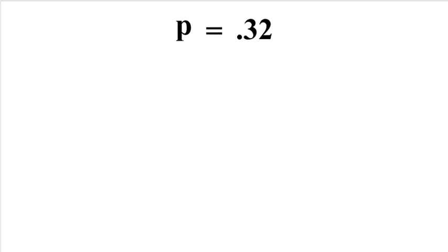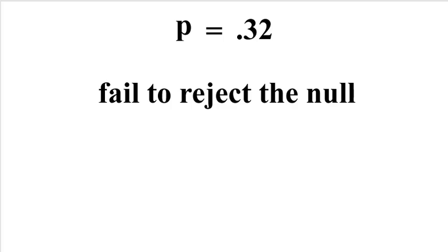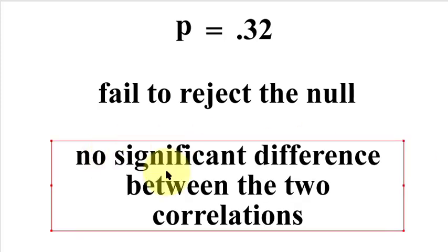Now, as you know, a p-value of 0.32 doesn't prove anything. So you fail to reject the null. The null is there's no significant difference between those two correlations. So there's no significant difference between the two correlations.